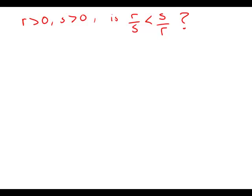If r equals 0 and s equals 0, is r over s greater than s over r? The first thing I'm going to do is cross-multiply in this inequality. The reason I can do that without worry is because it's guaranteed that both r and s are positive. If one of them were negative, I would have to reverse the inequality. But since I'm only multiplying by positives, the inequality stays the same way.